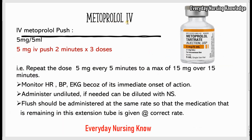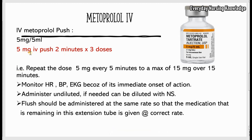IV metoprolol comes in a concentration of 5 mg in 5 mL — that is a 1:1 concentration. You have to give 5 mg IV push over 2 minutes, which means 2.5 mg over 1 minute. Repeat this for a total of 3 doses, meaning repeat the 5 mg dose every 3–5 minutes, to a maximum of 15 mg over 15 minutes.